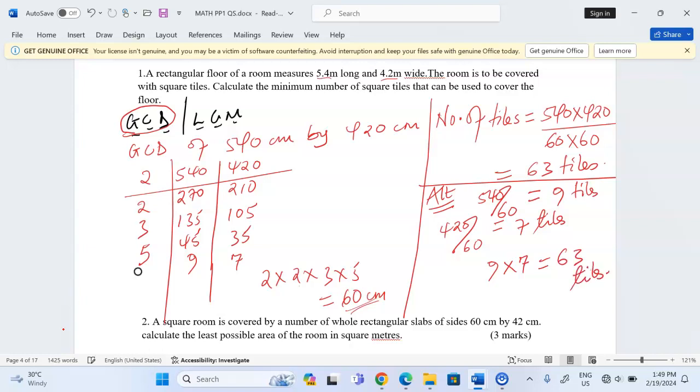So we calculate the GCD when we are moving from a greater dimension to smaller dimensions, like from lengths of the building to lengths of the square tiles which are covering the floor.